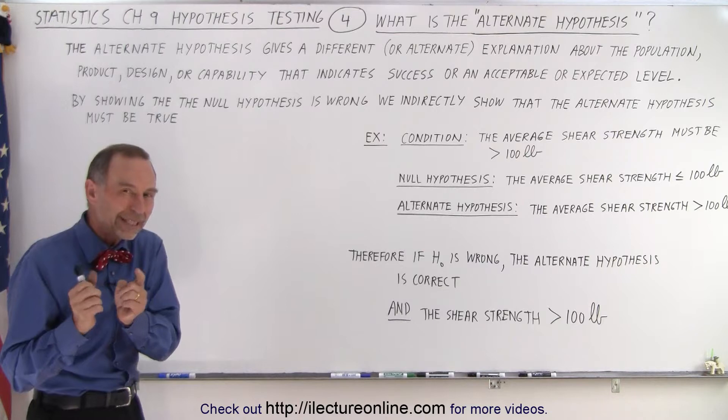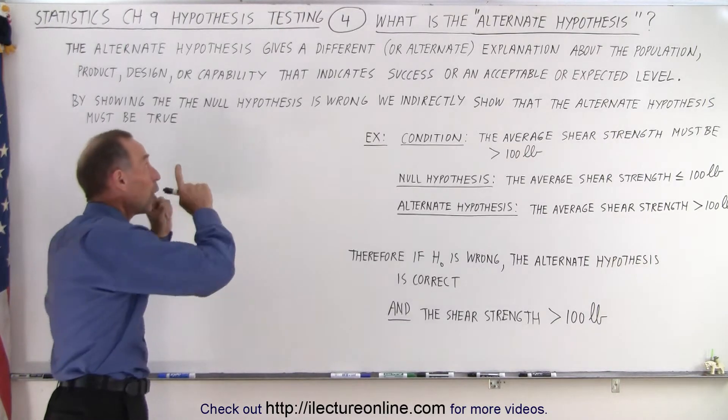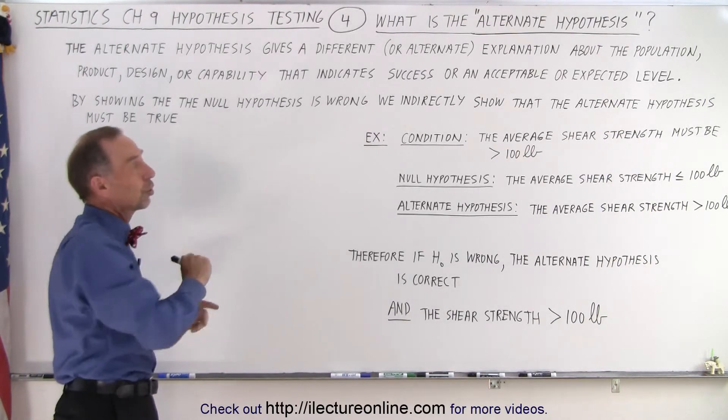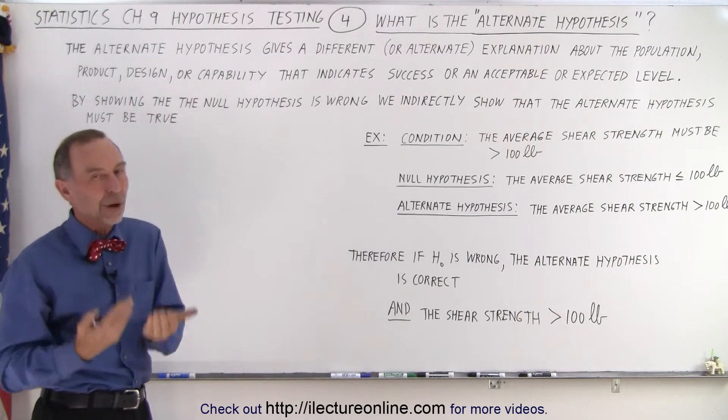Now by showing that the null hypothesis is wrong, we indirectly show that the alternate hypothesis must therefore be correct.